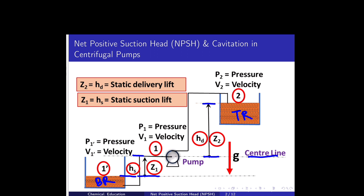Since the water is at rest at the bottom reservoir, V1-dash equals zero. In the top reservoir, point 0.2 is at the liquid surface. Here V2 is the velocity and P2 is the pressure. Since the top reservoir is also open to atmosphere, P2 is atmospheric pressure.